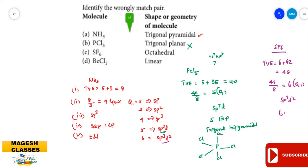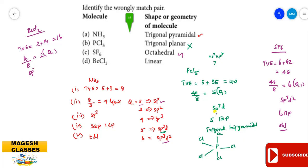For SF₆, all six bonds are bond pairs with no lone pairs, so the shape is regular octahedral — correctly matched. For BeCl₂, total valence electrons = 2 + 14 = 16. Dividing 16 by 8 gives quotient 2, indicating sp hybridization with two bond pairs and no lone pairs. It is a regular linear shape — correctly matched. Therefore, PCl₅ is the wrongly matched pair.